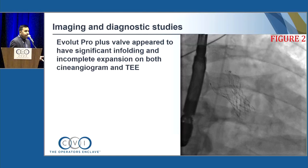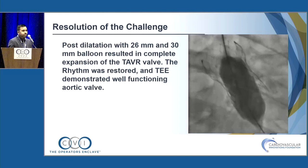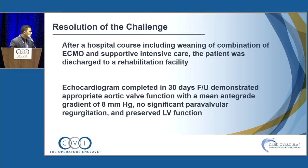We had seen infolding of less than four nodes. The cine-angiogram and TEE showed incomplete expansion of the valve with significant infolding. Immediately we performed post-dilation with a 26 mm and then 30 mm balloon, resulting in complete expansion of the TAVR valve. TEE demonstrated a well-functioning aortic valve. After a hospital course including weaning of ECMO and supportive intensive care, the patient was discharged to rehab. Post-30-day echo showed appropriate aortic valve function with mean gradient of 8 mmHg, no paravalvular regurgitation, and preserved LV function.